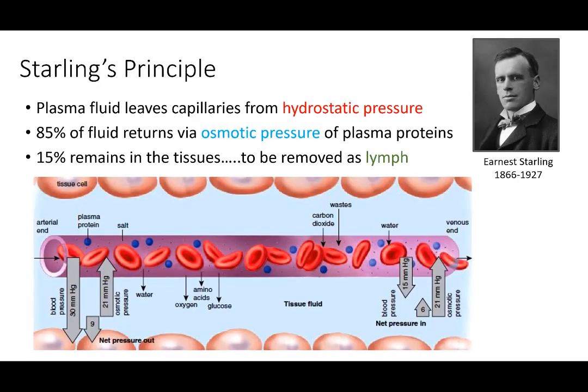Starling's principle states that some plasma fluid — mostly water — leaves through hydrostatic pressure. 85% returns, but 15% remains in the tissue. This is okay — that 15% is returned via the lymph. We'll learn about the lymphatic system in this unit after we deal with the blood.